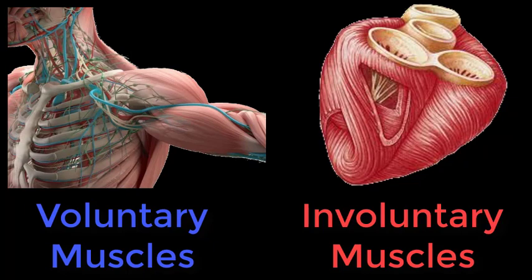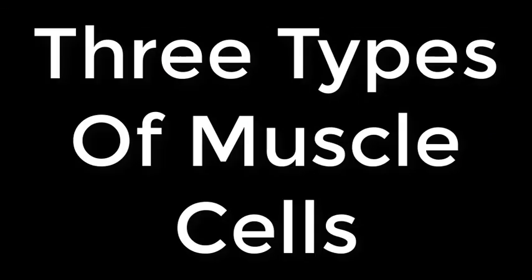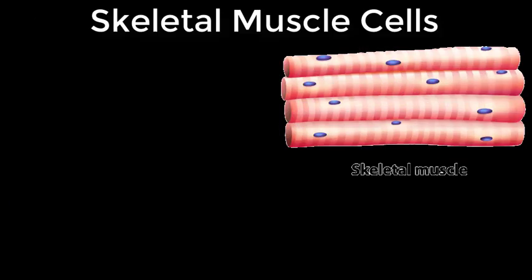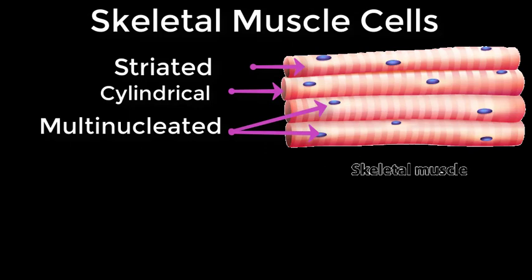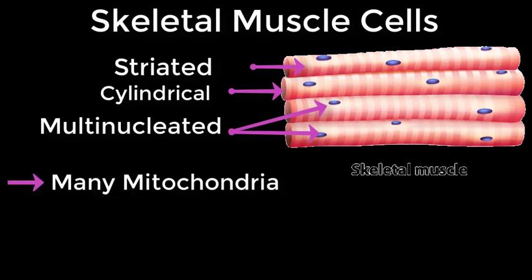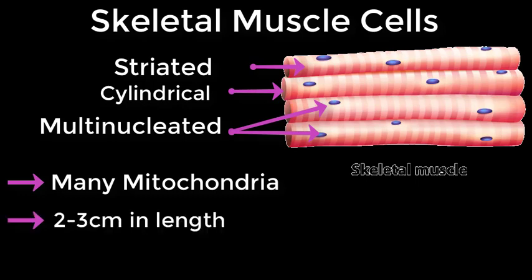Now let's learn about the three different structures and basic functions of a muscle cell. First, the voluntary skeletal muscles. These are striated, cylindrical, multinucleated and contain many mitochondria, because they consume the most energy due to their movement. They are about as long as the muscle they are in, which can be many centimeters. Skeletal muscles are attached to bones by tendons and can be as long as 30 centimeters, although they are usually between 2 and 3 centimeters in length, which is roughly an inch.